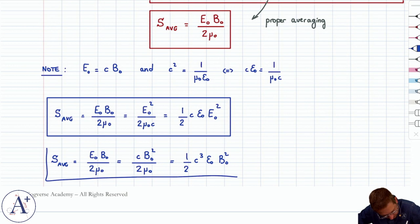So worth pointing out that, yes, there is a formal definition of the average intensity, which is E₀ B₀ over 2μ₀. But typically you can express it either solely in terms of E₀ or solely in terms of B₀, as long as you know these two formulas.